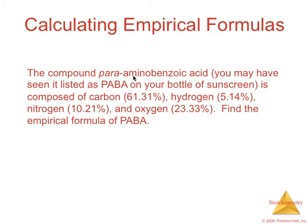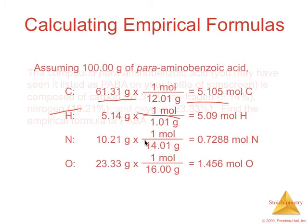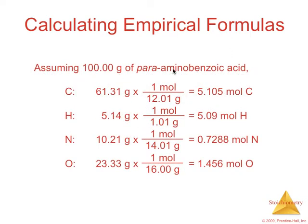looking at para-aminobenzoic acid, you'll see that listed as PABA on your bottle of sunscreen. Information that we're given is that it has carbon at 61.31%, hydrogen at 5.14%, nitrogen, and oxygen, and it gives us those mass percents. So the first thing that we would do is we're going to assume that we have 100 grams of this compound. Each percentage just goes directly into grams then.